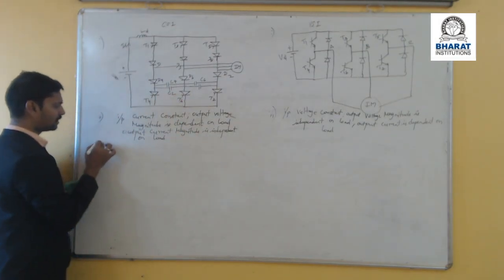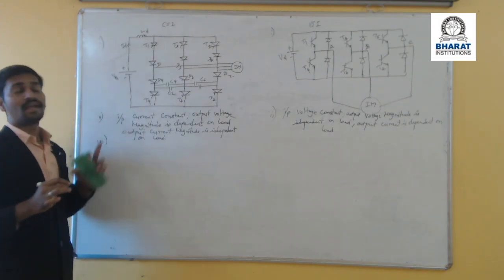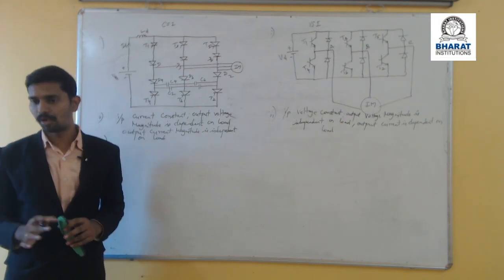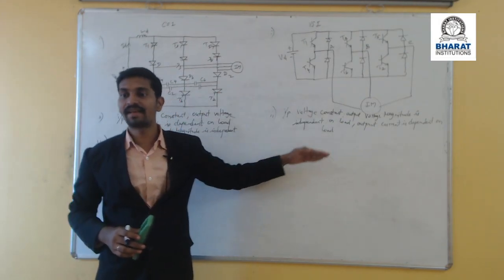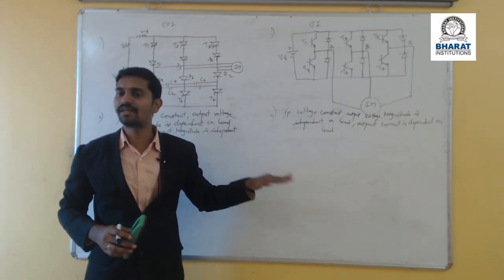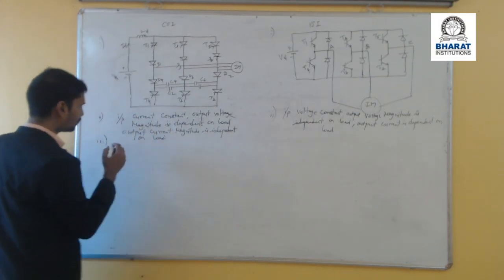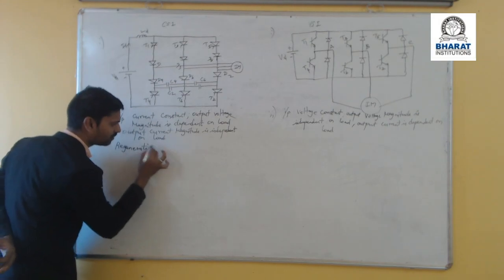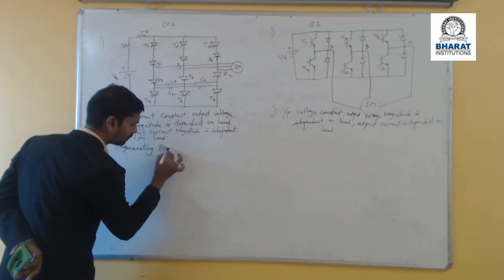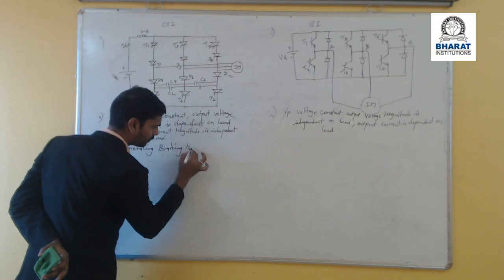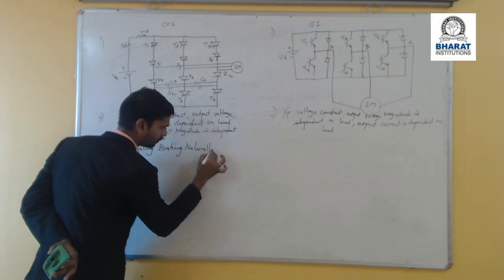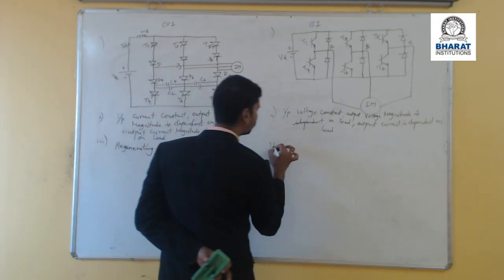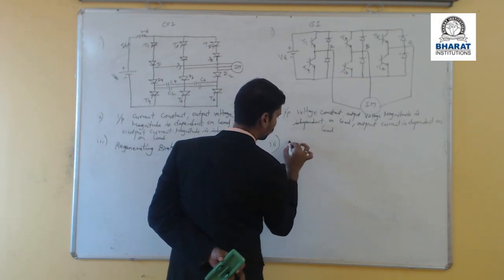The third difference is that in current source inverters, regenerative braking is naturally possible. But in voltage source inverters, regenerative braking is not naturally possible.